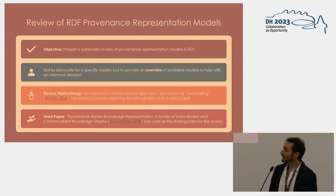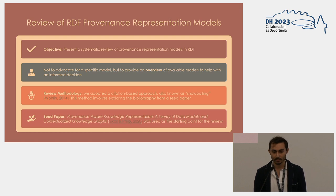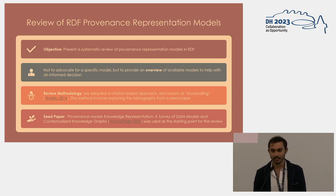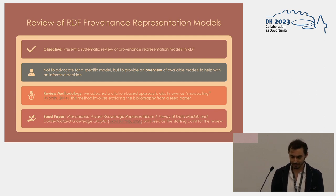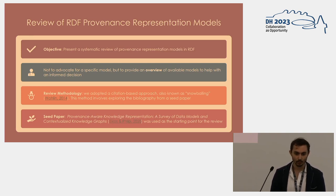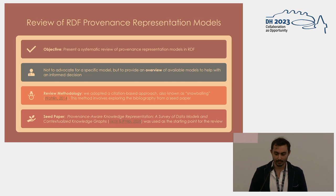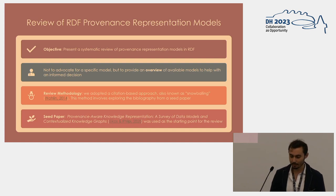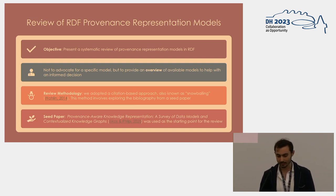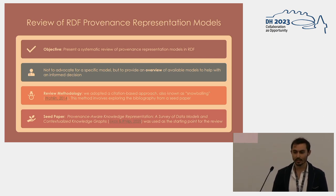This work is basically a systematic review of metadata representation models for provenance and change tracking in RDF. We do not want to advocate for a specific solution, but just to show an overview of the solutions you can use so that you can make an informed decision. As a review methodology, we used snowballing as defined by Wohlin. We started from a seed paper by Sikos and Philp, which is quite famous on this topic, and then exploded the bibliography recursively until we found no more relevant resources.